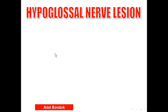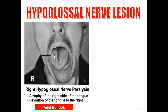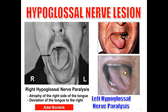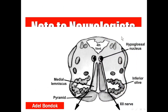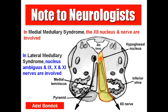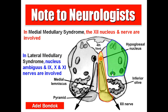A lesion of the hypoglossal nerve causes paralysis and atrophy of the same side of the tongue, with deviation of the protruded tongue to the paralyzed side. A note for neurologists: in medial medullary syndrome, the hypoglossal nucleus and nerve are involved together with the medial lemniscus and corticospinal tract, causing contralateral hemiplegia. In lateral medullary syndrome, nucleus ambiguus and the glossopharyngeal, vagus, and accessory nerves are involved, causing bulbar paralysis.